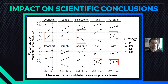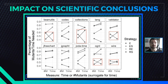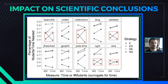Lastly, we decided to check how these findings impact scientific conclusions. We reproduced the seminal work of Ofut et al. from 1996, and this time we measured execution time. For 5 out of 10 programs, the rank of strategies changed when using the execution cost. As a consequence, an inconclusive scientific finding using the surrogate measure is transformed into an unequivocal finding when using the true execution cost.